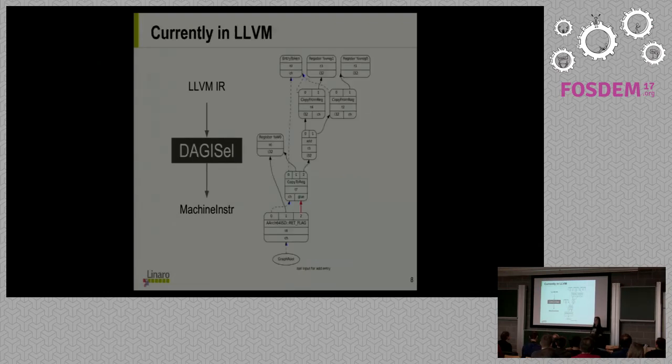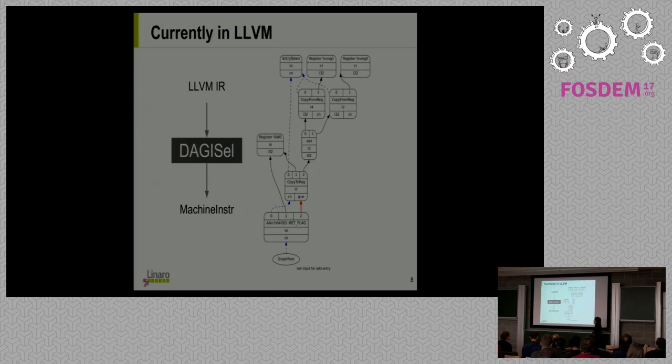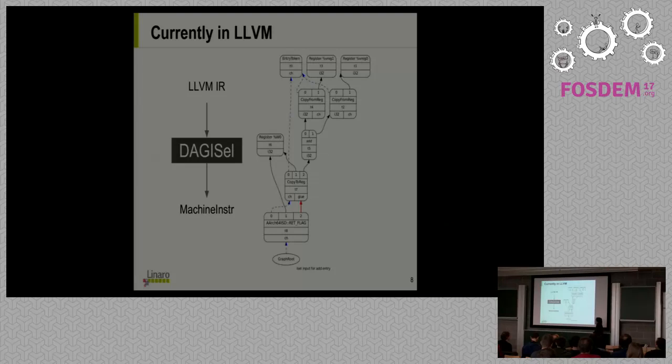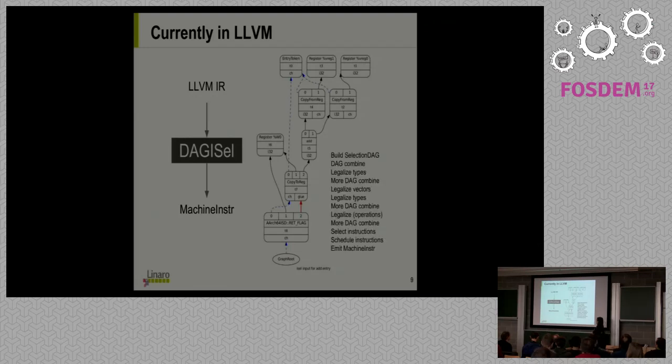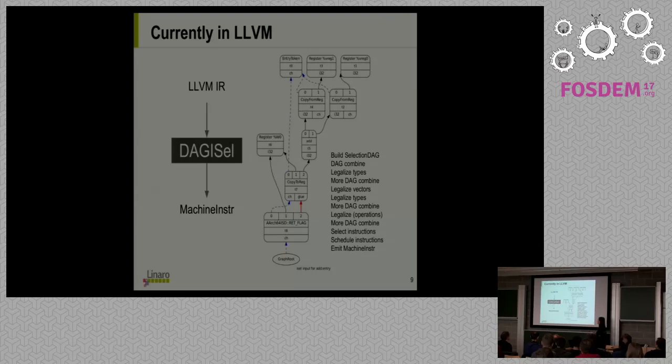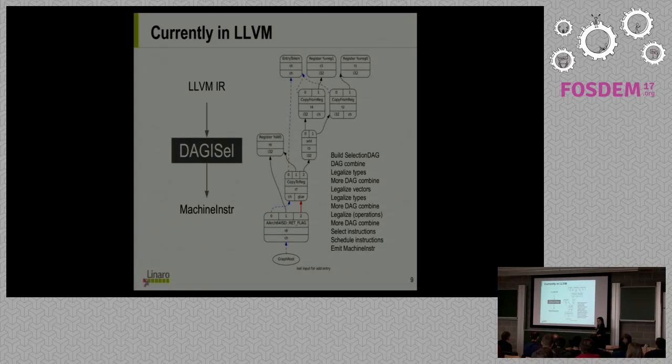Another thing in machine IR is pseudo-instructions, which don't correspond directly to a hardware instruction. They're used for various purposes in the back end. For instance, if you want a certain sequence of instructions that have to stay in that order and you don't want the scheduler to put anything between them, like accesses to the thread local storage descriptor, you use a pseudo-instruction and expand it later when you know it's safe. That's enough about machine IR.